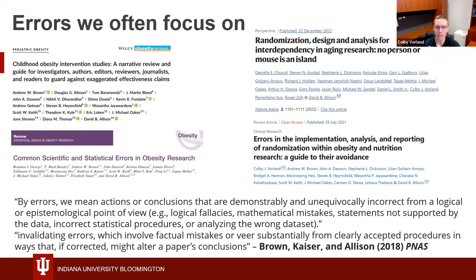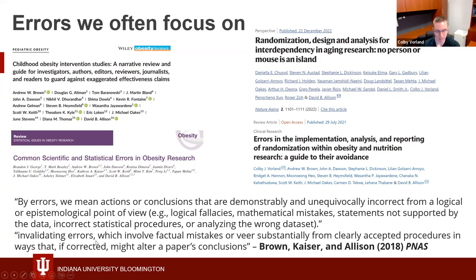Our group focuses on what we call unequivocal or invalidating errors — not matters of opinion. By errors, we mean actions or conclusions that are demonstrably or unequivocally incorrect from a logical or epistemological point of view, such as logical fallacies, mathematical mistakes, statements not supported by the data, incorrect statistical procedures, or analyzing the wrong data set. Invalidating errors are those involving factual mistakes or veering substantially from clearly accepted procedures in ways that, if corrected, may alter a paper's conclusions.